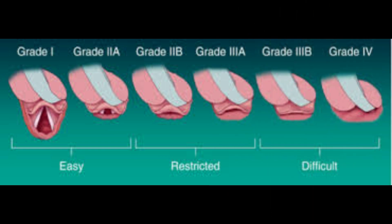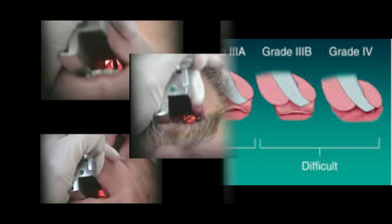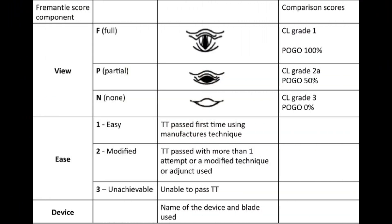According to Cook's modified laryngoscopy view of Cormack and Lehane grading, Grade 2 and Grade 3 are further subdivided: 2a — the posterior commissure and posterior parts of the vocal cords are visible; 2b — only the arytenoids are visible; 3a — epiglottis is visible and liftable; 3b — epiglottis is visible but not liftable. The patient here has CL grade 1. There are also other scoring systems such as percentage of glottic opening score and ease of intubation grading.